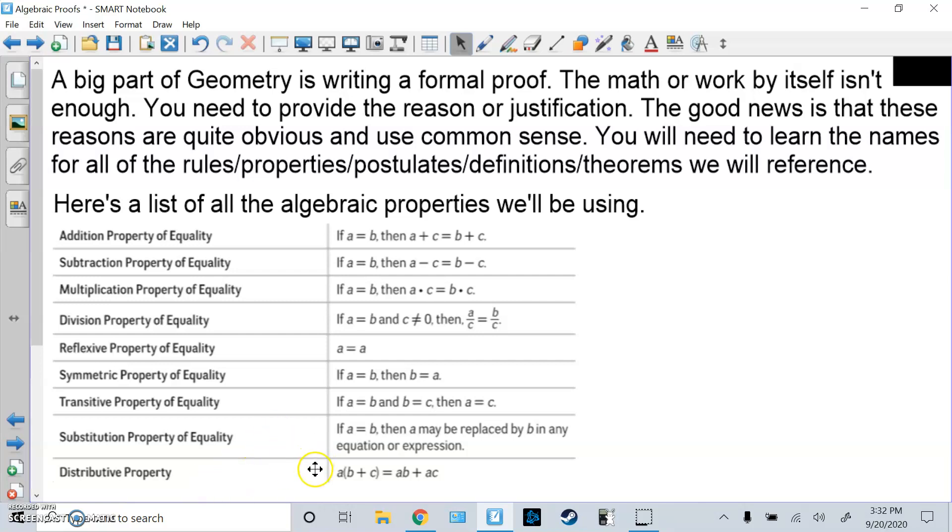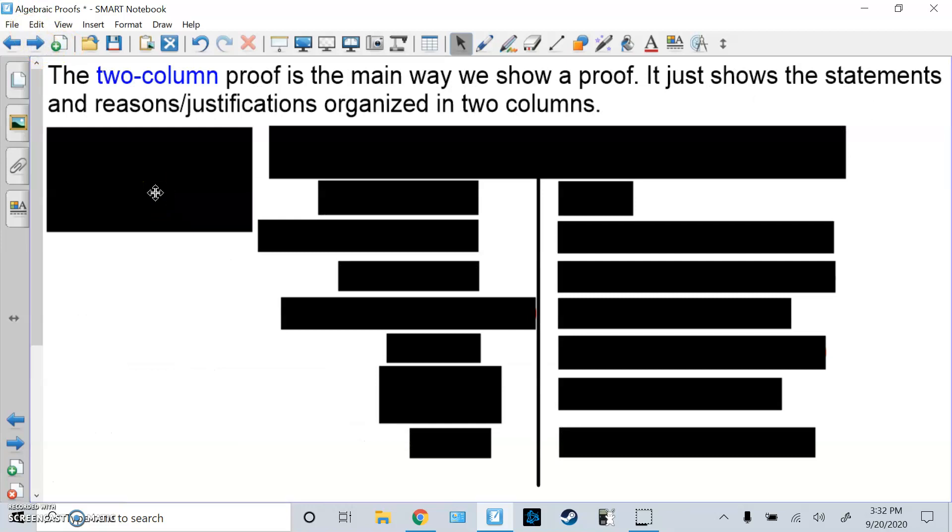Then distributive, so if A parentheses B plus C, it's just A times B plus A times C. Here's a two-column proof, which is the main way we show a proof. It just shows the statements and reasons organized in two columns.